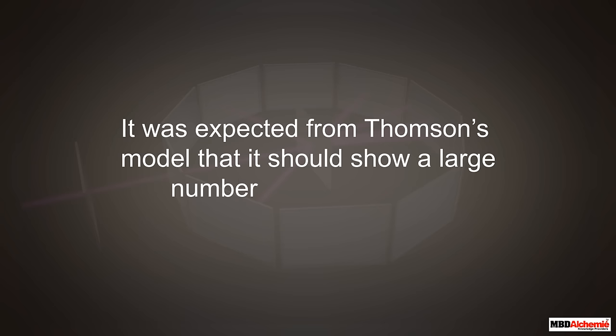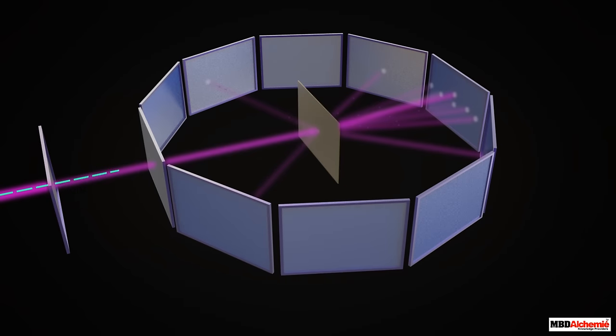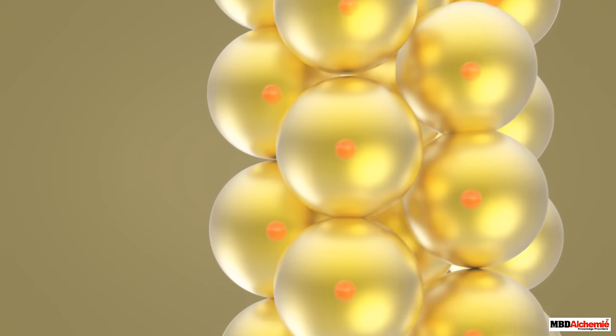Their scattering pattern was shown by the detector. It was expected from the Thompson model that it should show a large number of deflections, but something else was observed. Actually, the detector showed that most of the alpha particles passed through the gold foil without showing any deflection. Only a few of them showed deflection in different directions. A very few of them, essentially one in 12,000, rebounded back. Such observations led to significant conclusions.